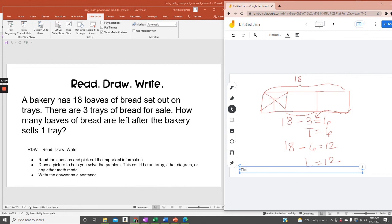There are 12 loaves left because there are 6 loaves on each tray, and 18 minus 6 equals 12.